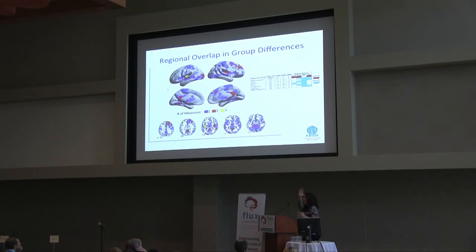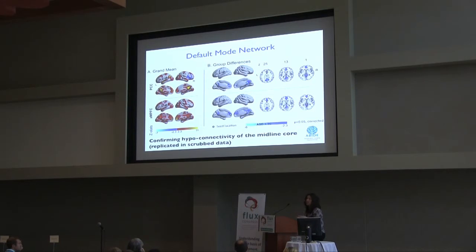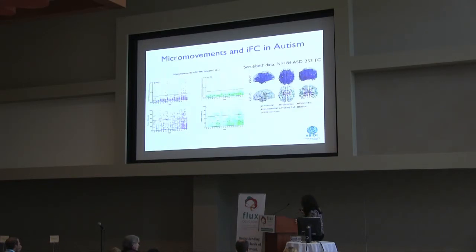We also surveyed the default mode network given the prominence of prior studies on this network. We confirm decreased connectivity between anterior and posterior nodes of the default mode network. One key point I want to highlight is the role of micro-movements: the distribution of mean framewise displacement per site is shown, with a red line indicating the cutoff for inclusion in analysis, along with the percentage of frames with movement above 0.2 mm.